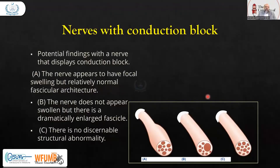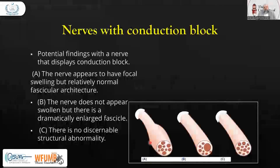The second-to-last slide covers the nerve and conduction block, with potential ultrasound findings when a nerve displays conduction block. First, the nerve appears to have focal swelling but relatively normal fascicular architecture — the fascicles are prominent on ultrasound. Second, the nerve does not appear swollen but there is a dramatically enlarged single fascicle. Third, there is no discernible structural abnormality — the nerve remains normal. So after a conduction block, we may see focal swelling, enlargement of one fascicle, or no change if the block is not effective.